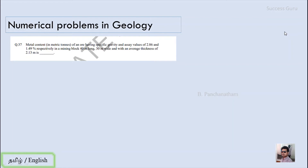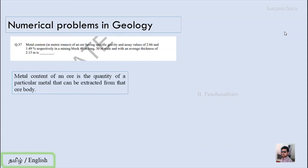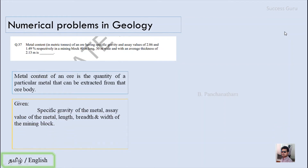The next question is from GATE 2014, Part B. Find the metal content of an ore having a specific gravity of 2.86 and an assay value of 1.49%, in a mining block of 40 meters long, 30 meters wide, and an average thickness of 2.13 meters. The metal content of an ore is the quantity of a particular metal that can be extracted from the ore body, which is closely related to the tonnage factor. In this question we are given specific gravity, assay value, and dimensions of the mining block, and we are asked for the metal content.